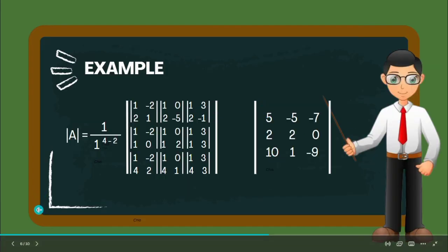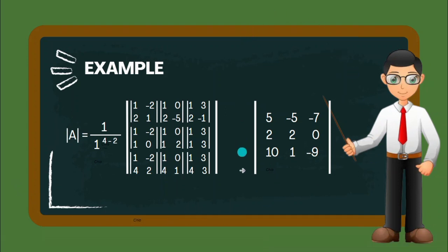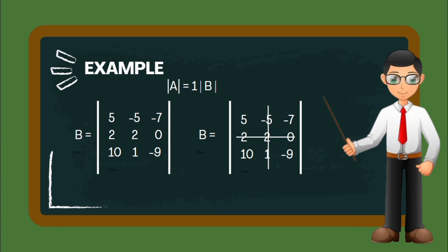This will be our matrix B, and we will again get the determinant of this matrix. Again, we will choose a pivot element. In this case, I choose 2, and then we will again create 2 by 2 matrices. We will be focusing on this column and row. So we have 5 and then -5, and then we have 2 and -2.